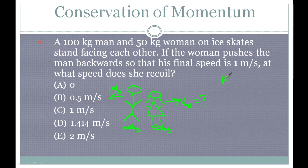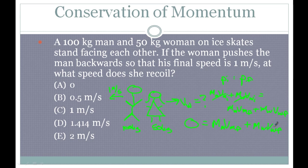We know the initial momentum equals the final momentum. So: mass of the man times initial velocity of the man, plus mass of the woman times initial velocity of the woman, equals mass of the man times final velocity of the man, plus mass of the woman times final velocity of the woman. Both people start at zero, so the left side is zero. We're left with: zero equals mass of the man times final velocity of the man, plus mass of the woman times final velocity of the woman. Now we just solve for the final velocity of the woman.